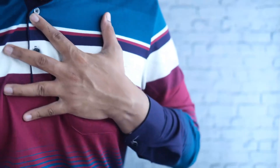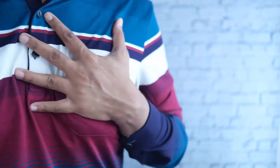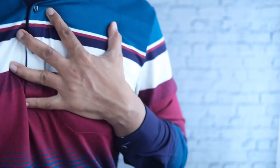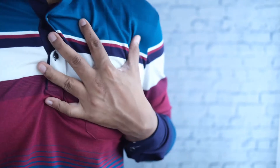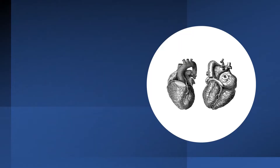If the liver is inhibited, this results in Qi constraint, which manifests with chest tightness, stomach pain, and tension in the trapezius area. The Chinese medicine heart represents the spirit and the function of moving blood.